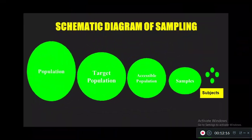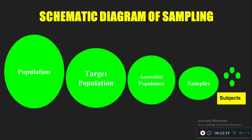Now we move to the schematic diagram of sampling, which you should draw in exams. The population is the very largest part. From the population, applying criteria gives the target population, which is still big but smaller than the population. Accessible population is smaller than target population. The sample is very small compared to accessible population. The elements are the individual subjects from the sample — each and every unit called a subject.